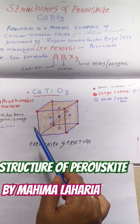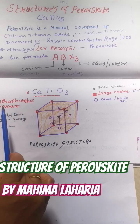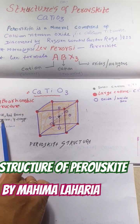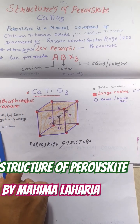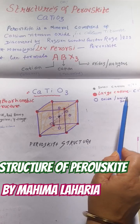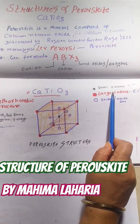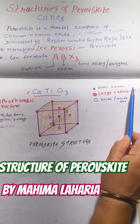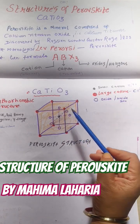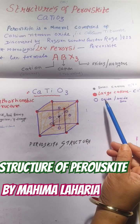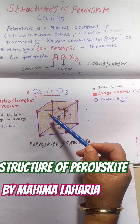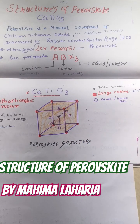You can see the structure here. It is an orthorhombic structure. The colors are black, red, brown, pale yellow, or yellow-orange. They are non-radioactive. The small cation in this structure is titanium, shown in black. The large cations are calcium, and the oxides are represented in blue.